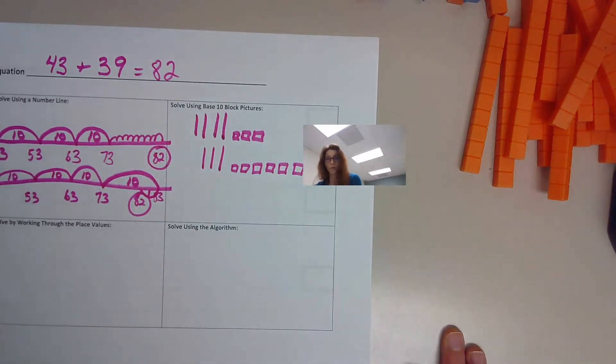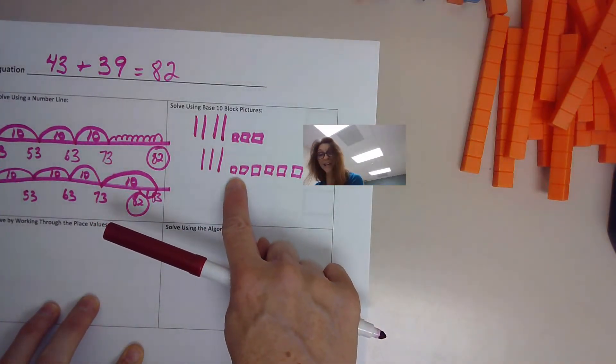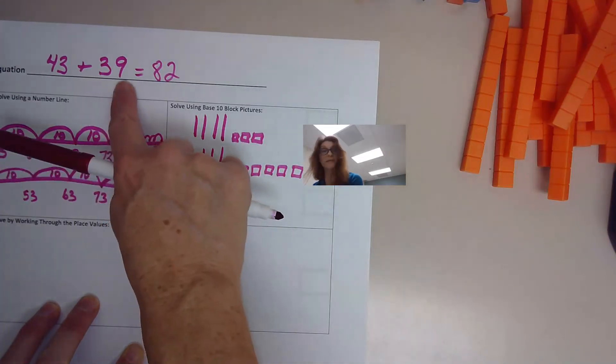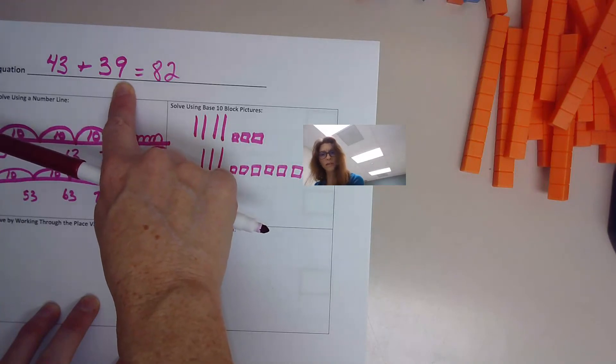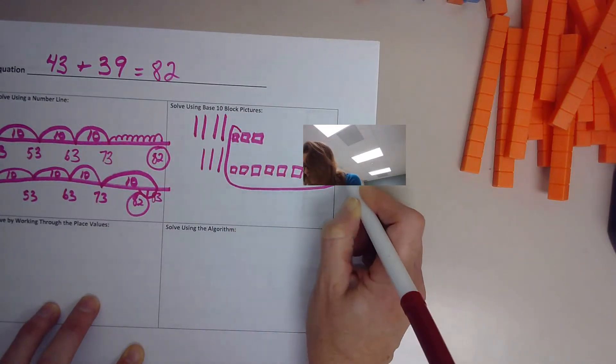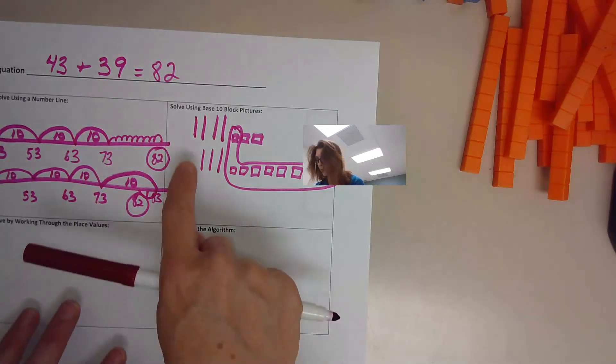Now, what we want to do is go and group numbers together that make easier numbers to count up by. Right here, we have a group of nine units. One, two, three, four, five, six, seven, eight, nine. Right from this number, 39. Well, nine and one more makes 10. So what we want to do is group these guys together to get a group of 10.